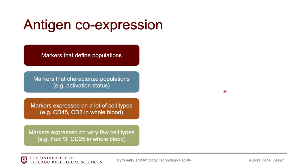You're probably starting to realize that antigen co-expression is very important to understand as you are designing your panel. It's also one of the more challenging things to understand because it's entirely dependent on your specific panel and the cells that you specifically are interested in analyzing. When I try to prepare myself to understand antigen co-expression so that I can appropriately pair my markers with fluorophores, I tend to take two perspectives and ask myself a bunch of questions about the cells I'm interested in looking at.